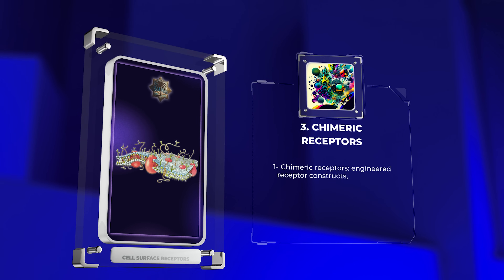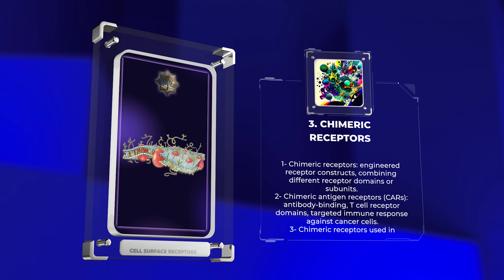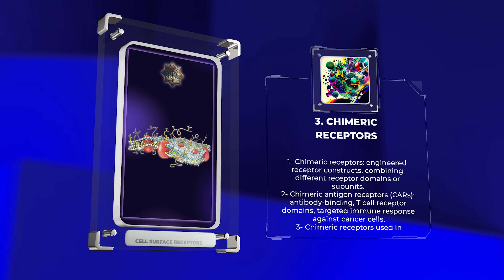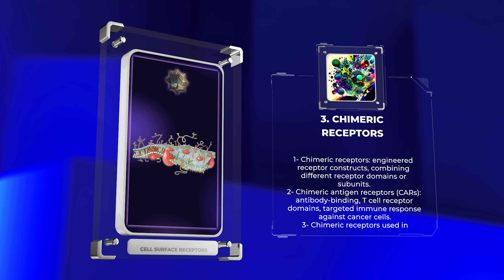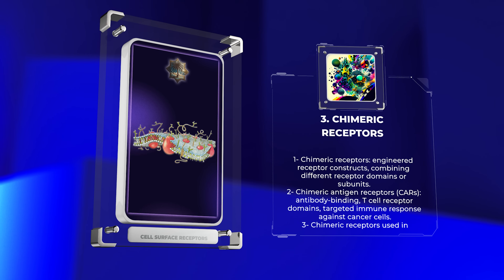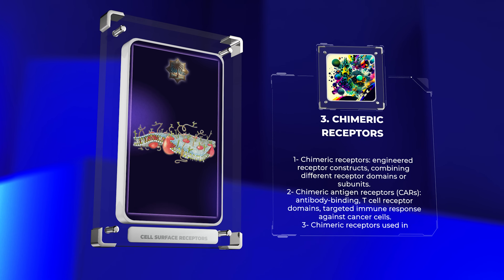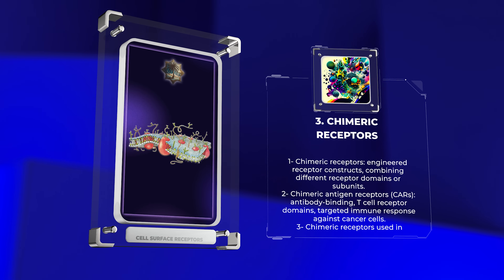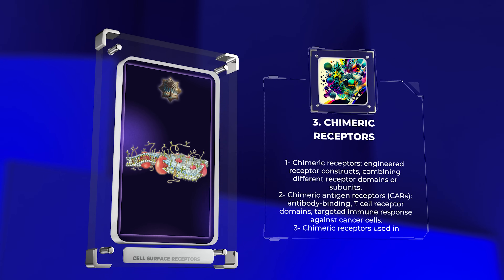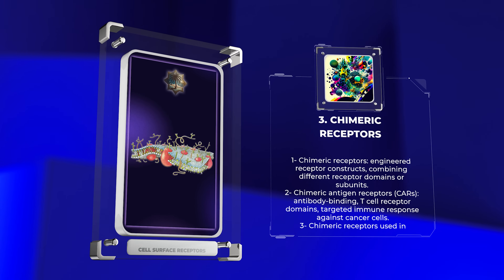Chimeric receptors are engineered receptor constructs that combine different receptor domains or subunits. They have provided insights, such as in cancer immunotherapy, where chimeric antigen receptors (CARs), combining antibody binding and T-cell receptor domains, enable targeted immune response against cancer cells. Chimeric receptors have also been used in other receptor families for studying ligand-specificity and signaling pathways.